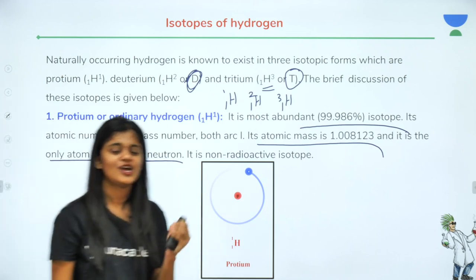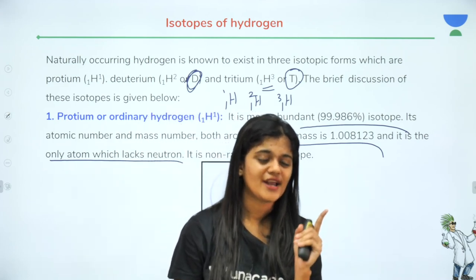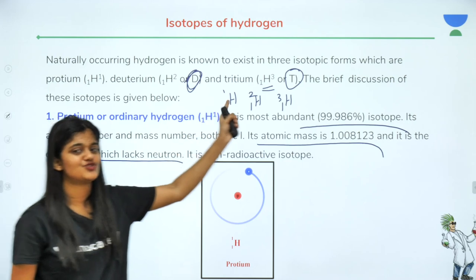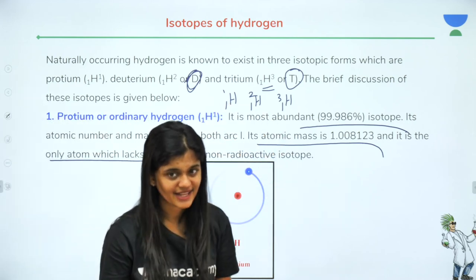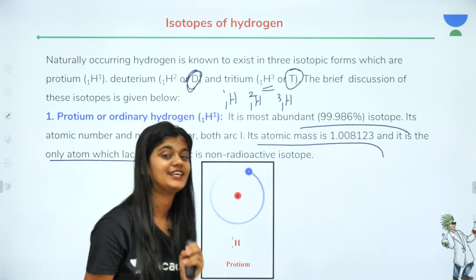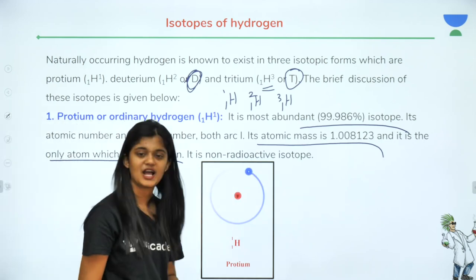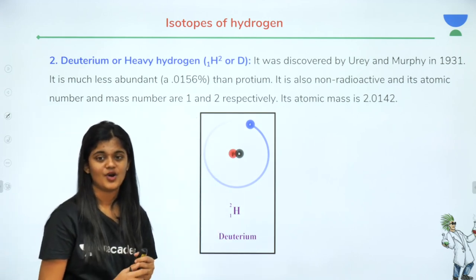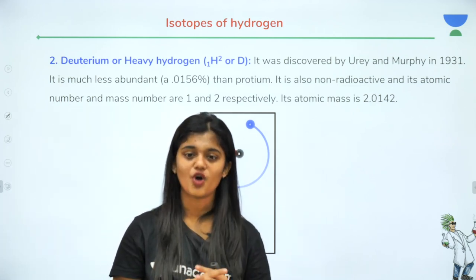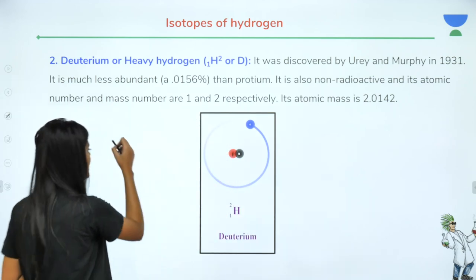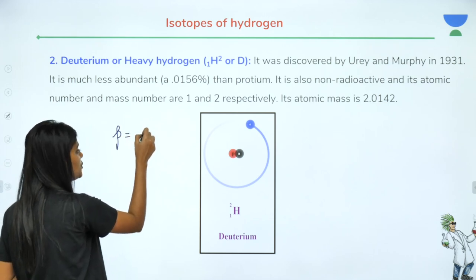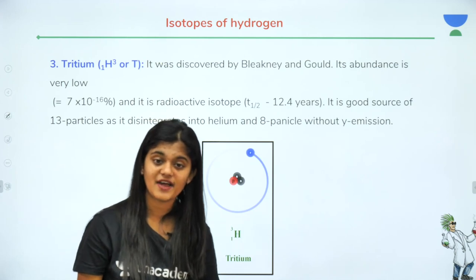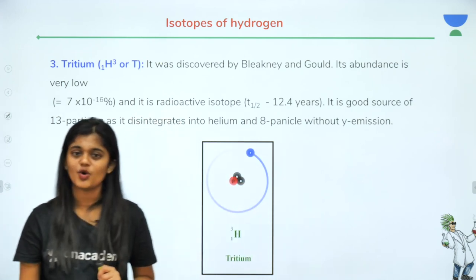¹H¹ has zero neutrons; ¹H² has one neutron. Hydrogen is the only element in the entire periodic table whose atom has no neutrons at all. Protium is a non-radioactive isotope. Deuterium — also called heavy hydrogen — is very much less abundant and also non-radioactive. Deuterium has one proton, one neutron, and one electron.